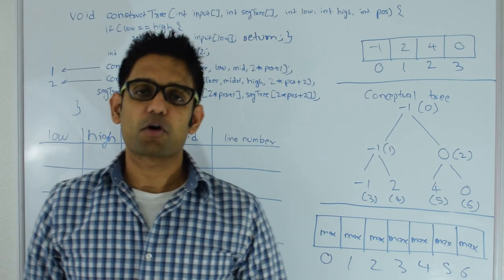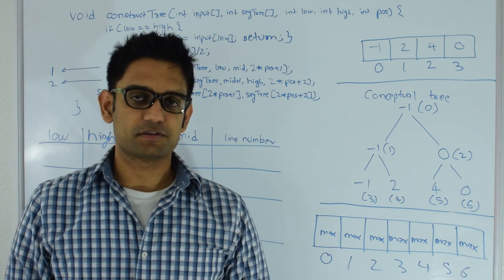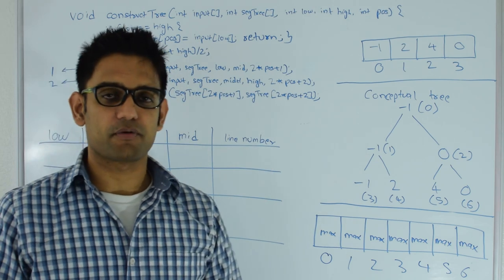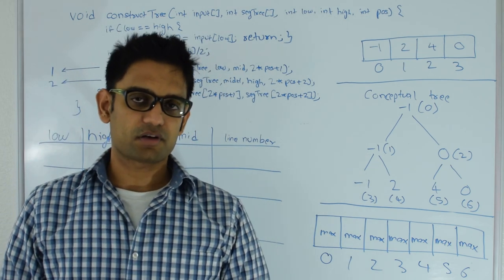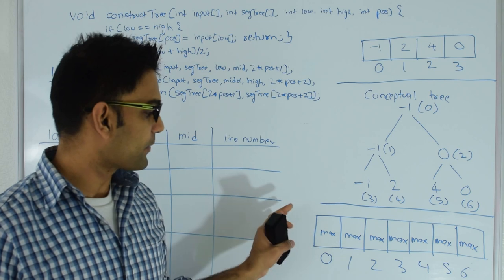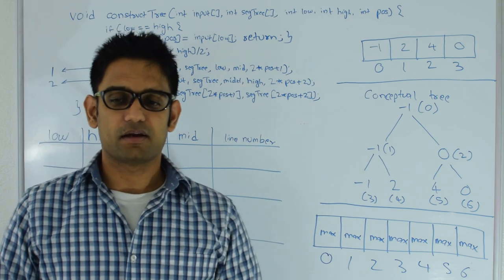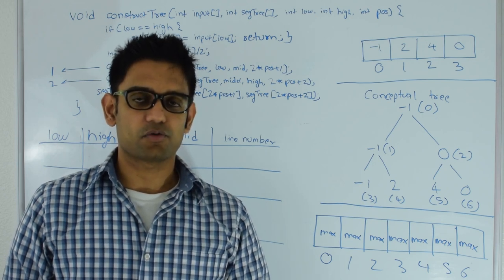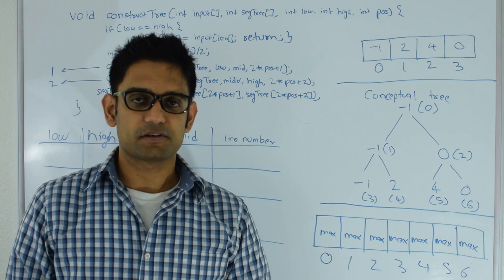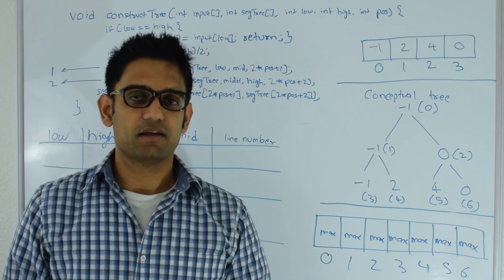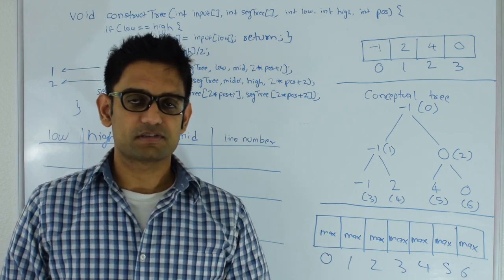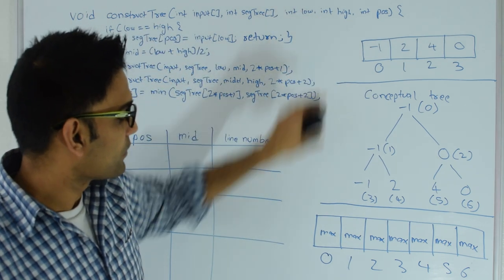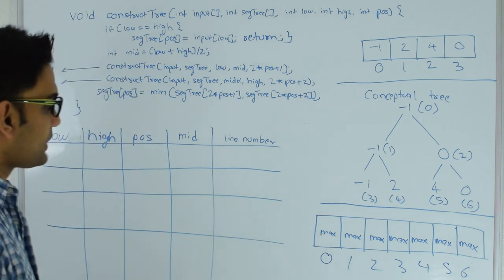Let's quickly summarize what we discussed: we looked at the use case of a Segment Tree, which is to do range queries in an array. We talked about how to perform a range query on a conceptual segment tree. We discussed how the segment tree is really represented using an array rather than a binary tree. The runtime complexity of constructing the segment tree is O(N), the space complexity is O(N), and searching is O(log N). If you didn't understand any of those concepts, go back and watch this video again.